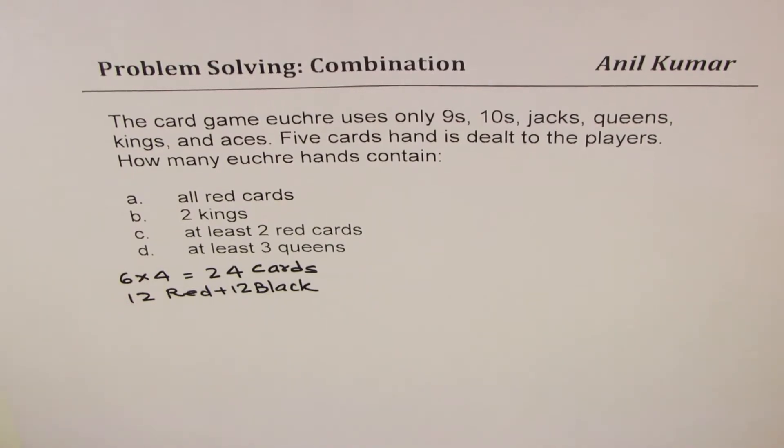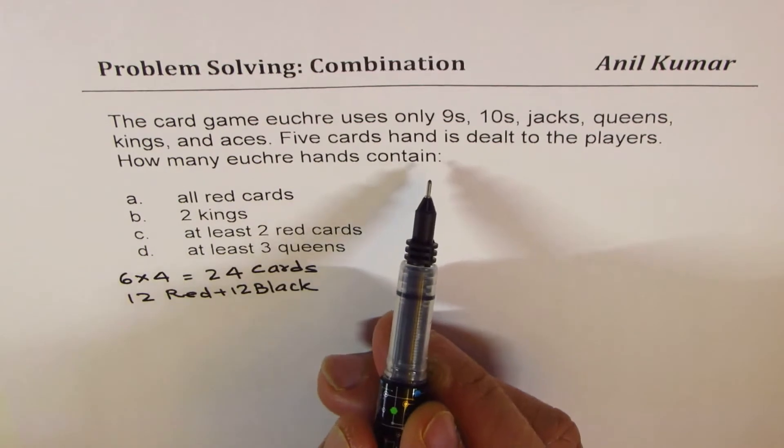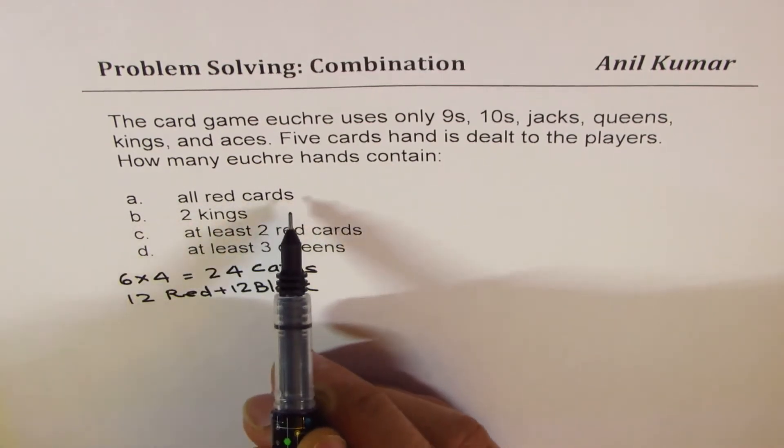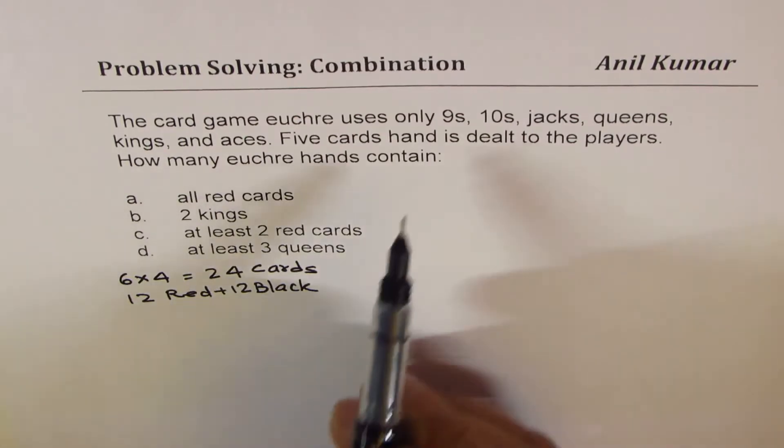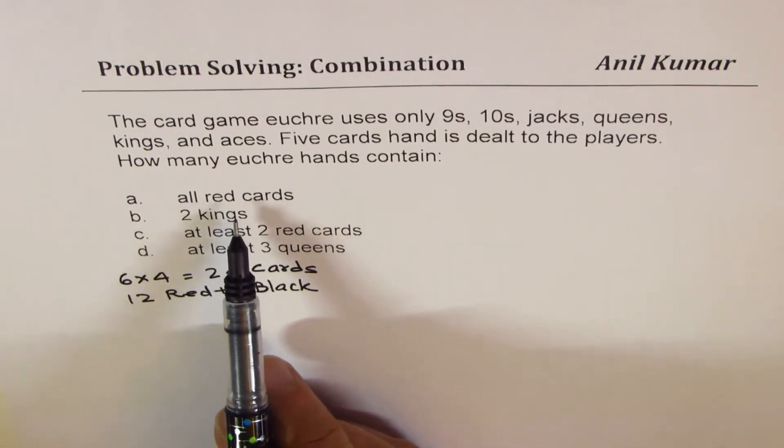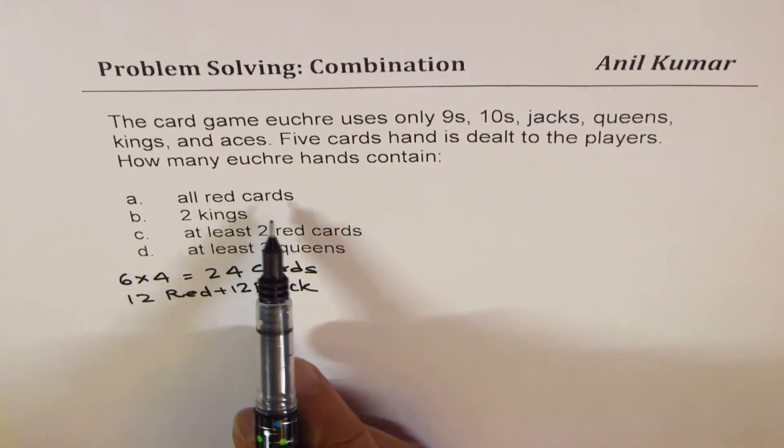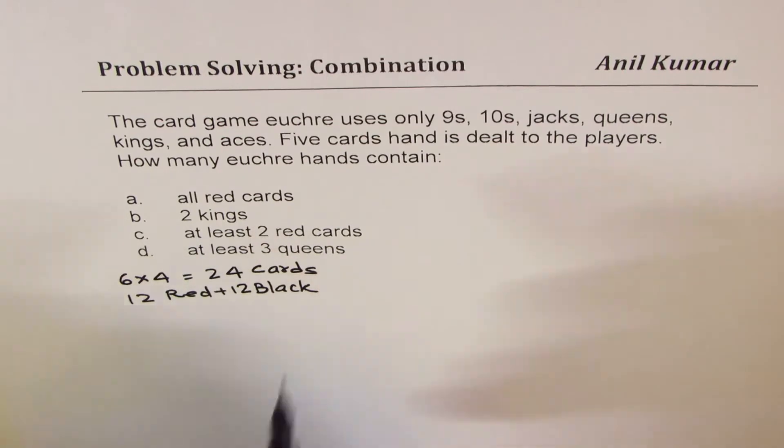we have 12 red plus 12 black cards. The first question is, how many Euchre hands contain all red cards? That is to say, we are actually selecting five, and we have to select all five from the red cards. And red cards are 12 in number.